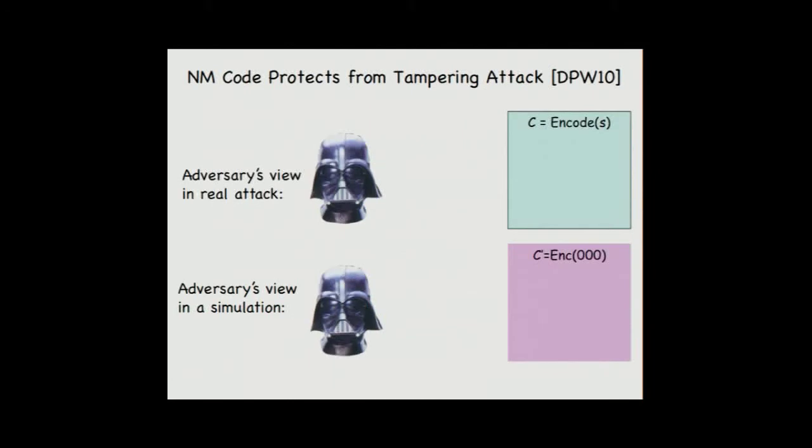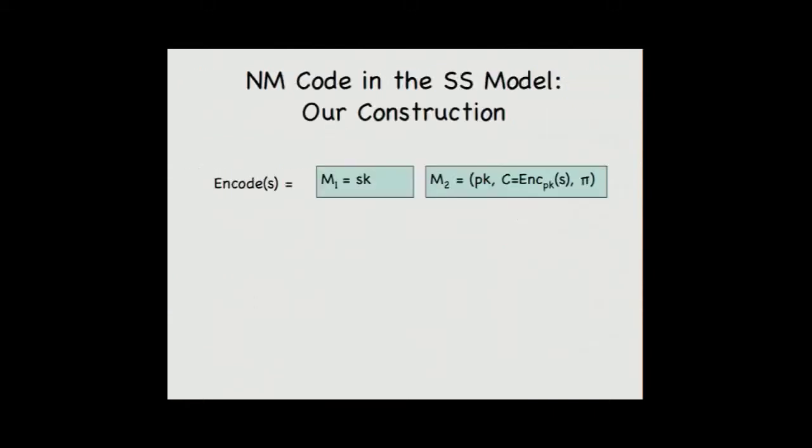What do we mean by polynomial size functions? The F is all polynomial size. And in the common reference string model, the tamper experiment can access to the CRS, and the encode and decode algorithm can also access to the common reference string. How can non-malleable code protect from tampering attack? We show that by a simulation paradigm, where the adversaries' view in the real attack can be simulated in a world where there is no secret involved. This means consider the following two experiments: by the non-malleability of the code, we know they are indistinguishable.